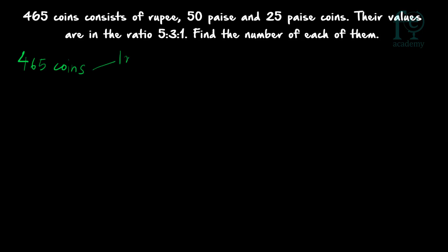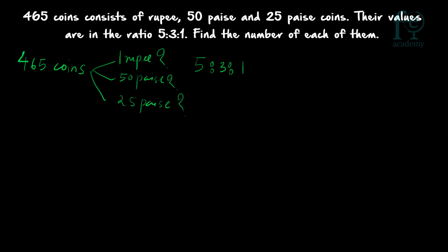There are 1 rupee coins, 50 paise coins, and 25 paise coins, and their values are in the ratio 5:3:1. You have to find out how many 1 rupee coins, how many 50 paise coins, and how many 25 paise coins there are.